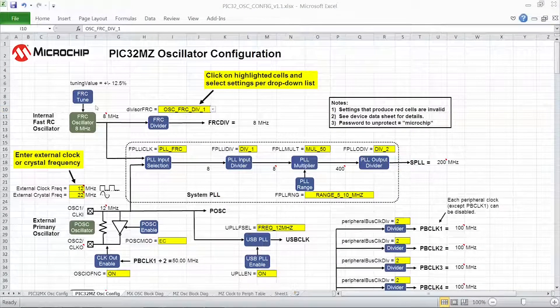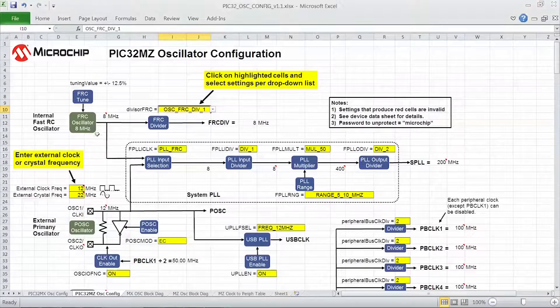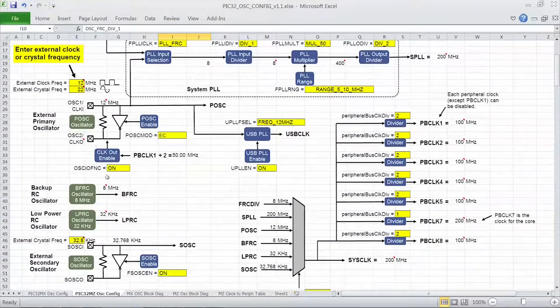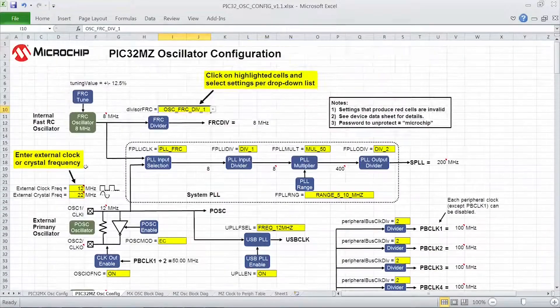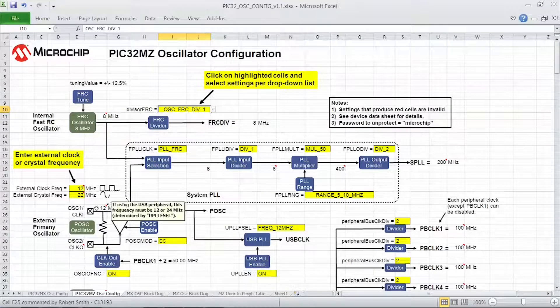All input clock sources are shown in the green blocks on the left. You'll note some of the cells have little red triangles, indicating there is a comment associated with it.